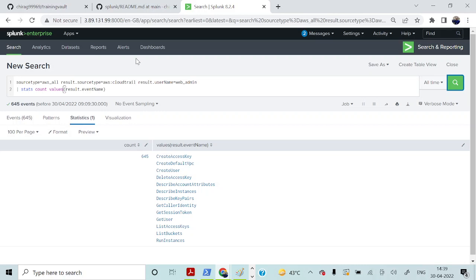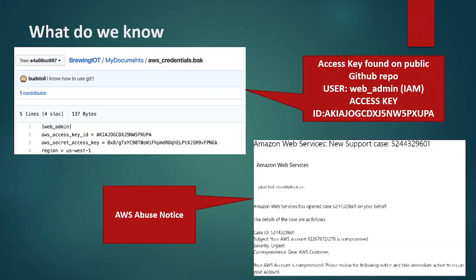Before I use the Splunk console, I'd like to move to the second slide. As I was telling you, you can refer to these screenshots. The very first screenshot on the top left shows that somebody published AWS access key IDs on a public GitHub repository, and therefore the AWS access key is compromised. At the bottom you can also see how an AWS abuse notice looks like. From the AWS abuse notice, we now know what access key has been compromised.